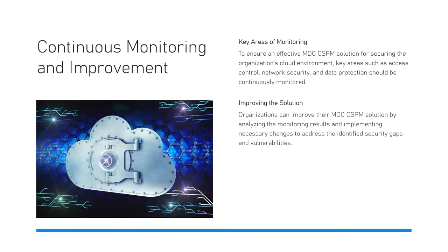For that, you would need continuous monitoring and improvement, which is an essential component for the successful operationalization of Defender for Cloud. This ongoing process of improvement ensures that your cloud security measures remain effective, adaptive, and aligned with both current and emerging security threats. You want to start by continuously scanning your cloud environment for security misconfigurations and compliance deviations. The goal at that point is to have real-time visibility into cloud operations, enabling the proactive management of your security posture. Next, you want to integrate feedback mechanisms into your monitoring system. It is also important to establish a routine for regularly reviewing and updating your security policies. And finally, ensure that improvements are documented and communicated across your organization.